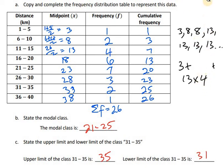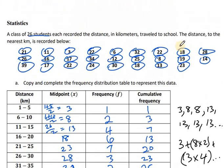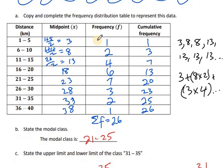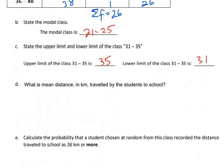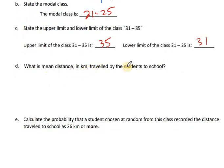We continue multiplying each midpoint by its frequency and adding them all together, then divide by the total number of students — 26. So the mean equals: (1×3) + (2×8) + (4×13) + (6×18) + (7×23) + (3×28) + (2×33) + (1×38), all divided by 26. This gives us the mean or average distance, the same as if we had added all 26 raw data values and divided by 26.